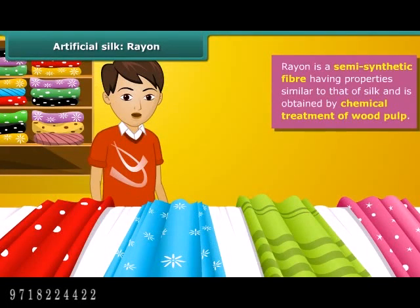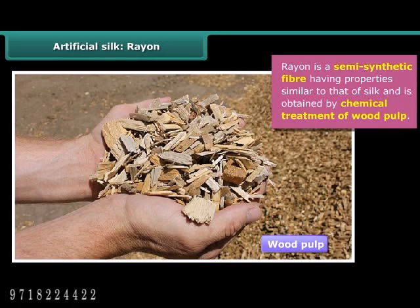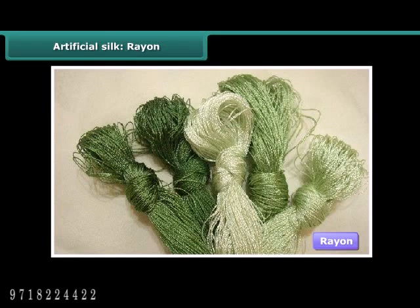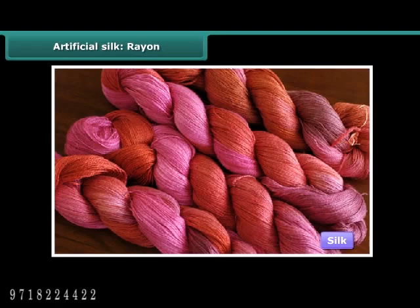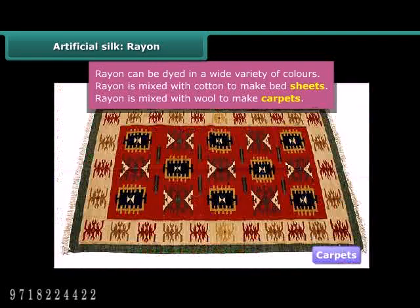Rayon is a semi-synthetic fiber having properties similar to that of silk. It is called semi-synthetic because it is a man-made fiber obtained by chemical processing of wood pulp, which is a natural resource. Rayon is also known as artificial silk — it is cheaper than silk but resembles it, can be woven like silk fibers, and dyed in a wide variety of colors. Rayon can also be mixed with cotton to make bedsheets or mixed with wool to make carpets.